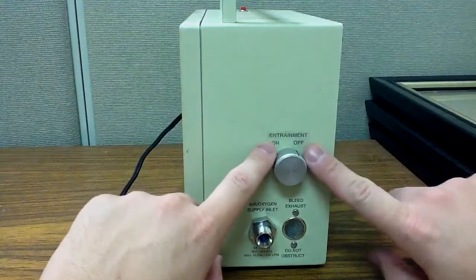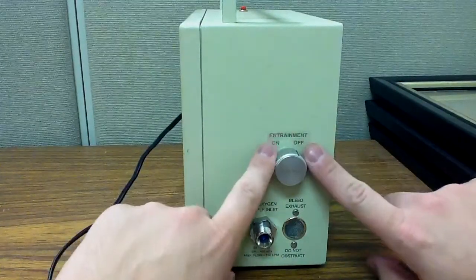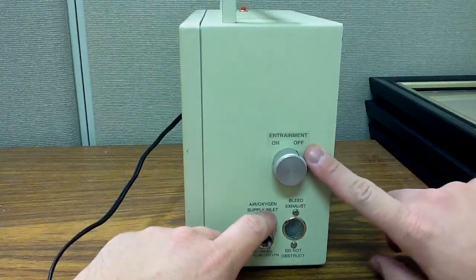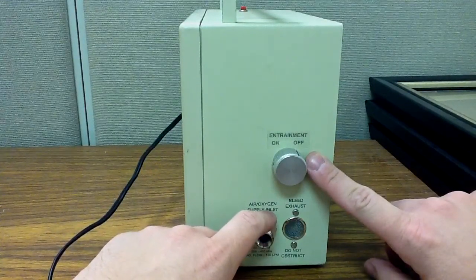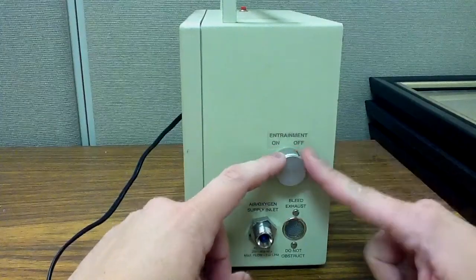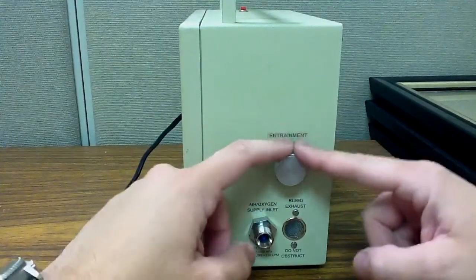This is what's called the entrainment selector. And basically what this does is it uses the Bernoulli principle, or a special case of the Bernoulli principle called the Venturi effect, and it can entrain air. You can see the line here, it's on-off. When I have this on off...